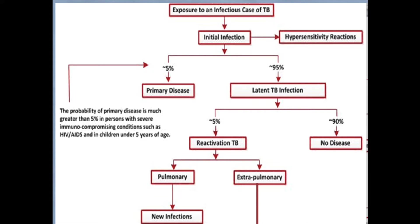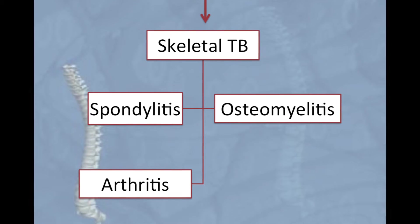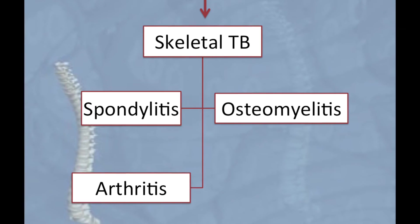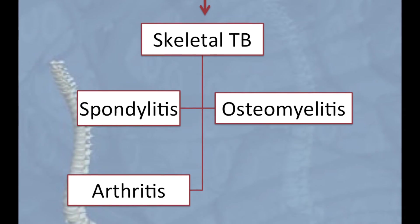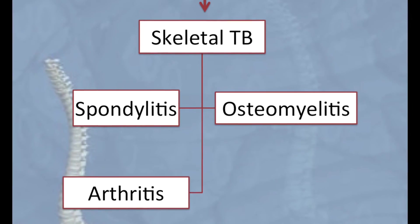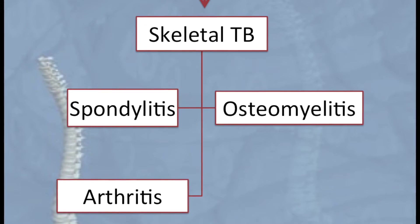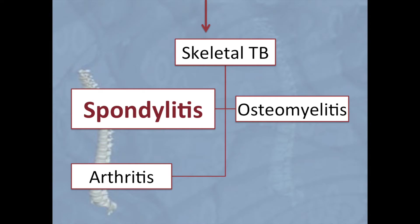One of the body sites affected by extra-pulmonary TB is the musculoskeletal system. Here, the three main manifestations are spondylitis, osteomyelitis, and arthritis. This video will focus on spondylitis.